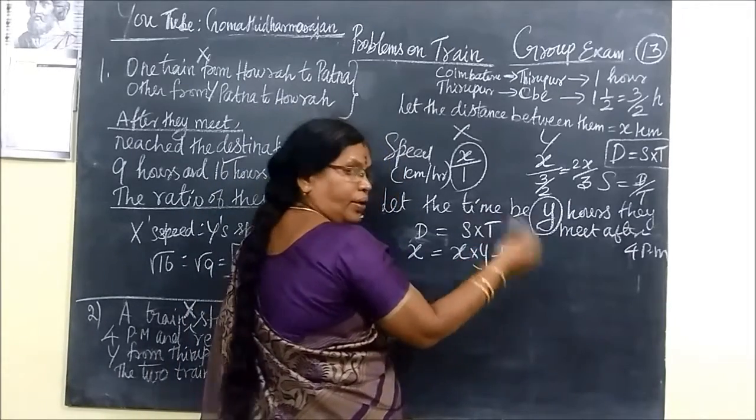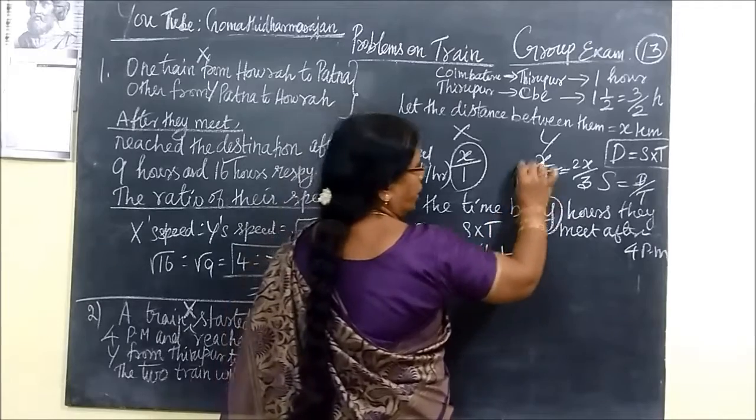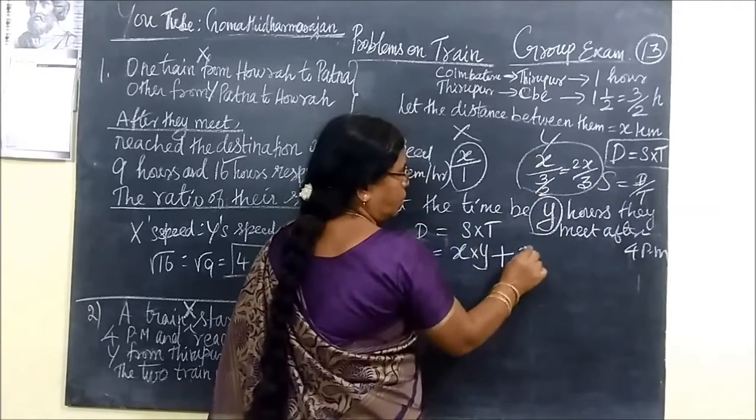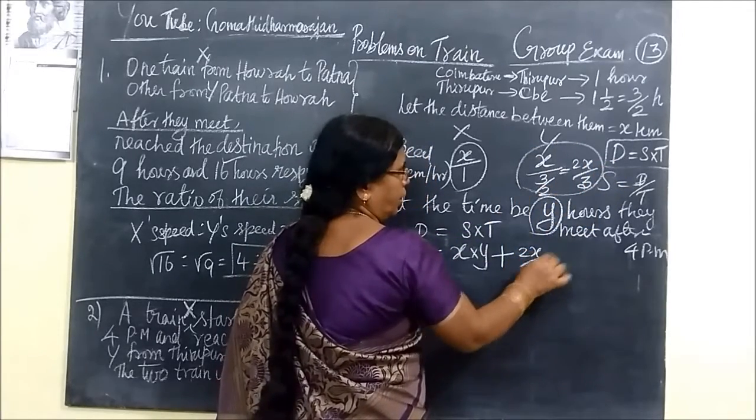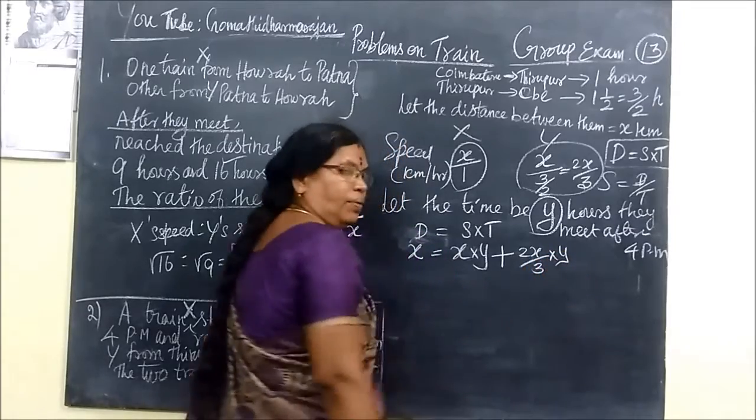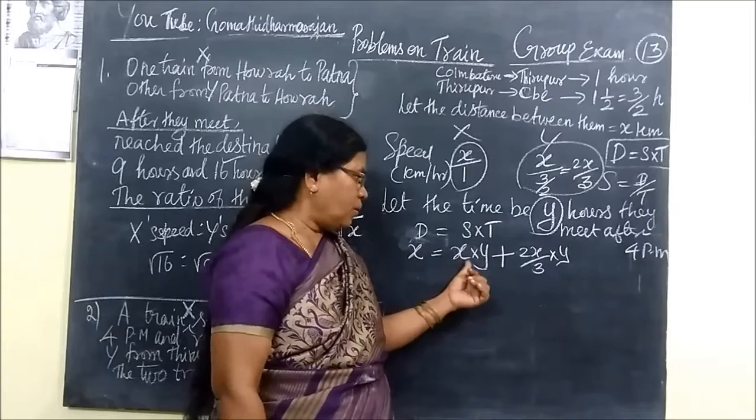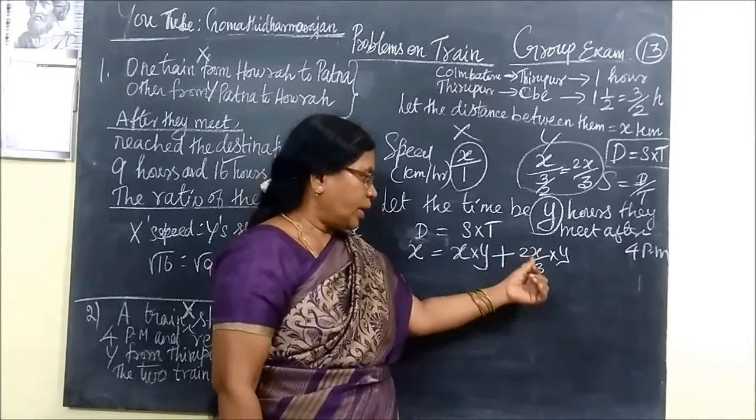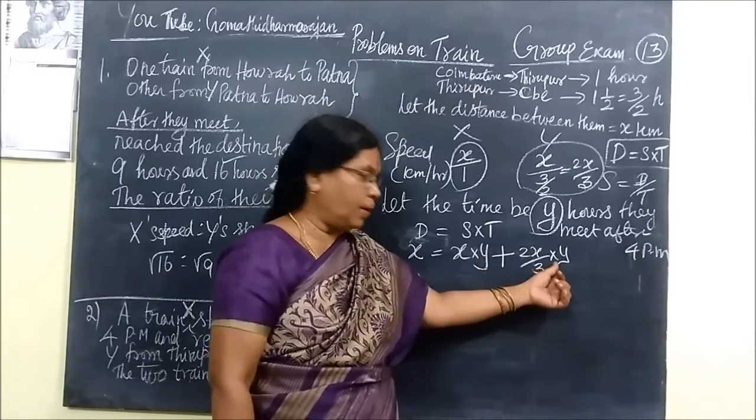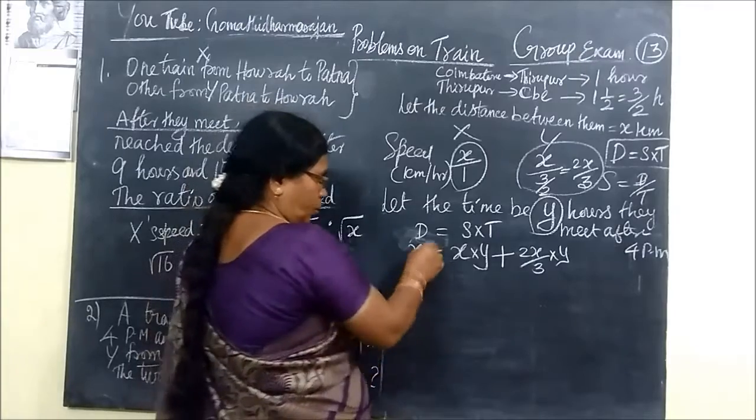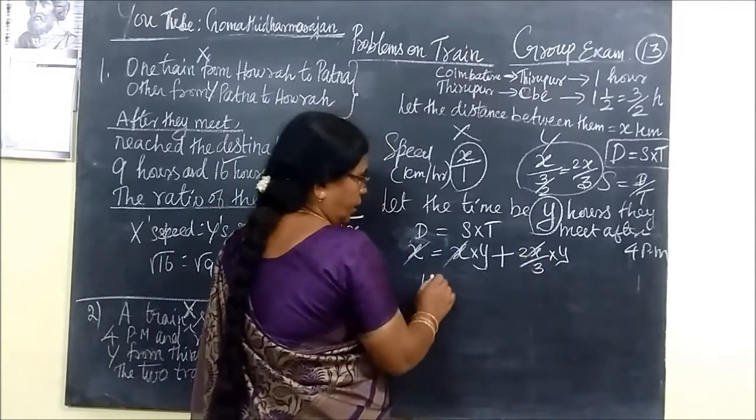Plus another train say Y train it is. Speed is 2X by 3. Time is same time Y. So for first train speed into time Y. For second train speed into time Y. So now throughout X one is canceled. The train number 1.